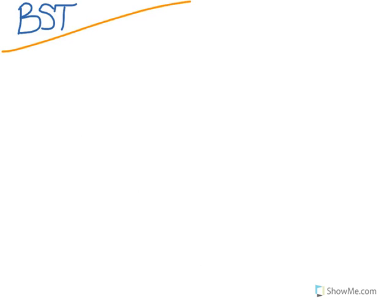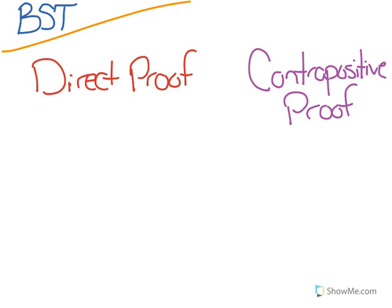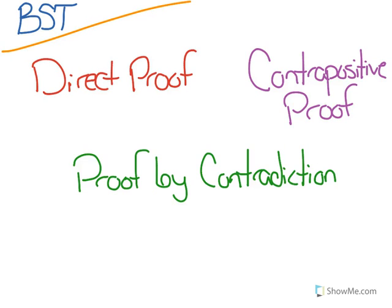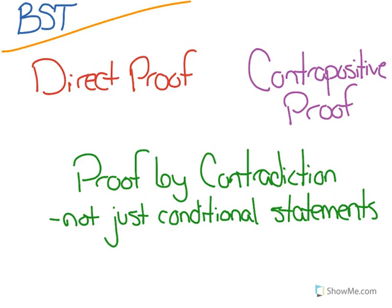In previous videos we've talked about proving statements or hypotheses about math in number theory using direct proof and contrapositive proof. Well, proof by contradiction is a third option for proving mathematical statements, and it's particularly useful because it can be used to prove statements that are not conditional,